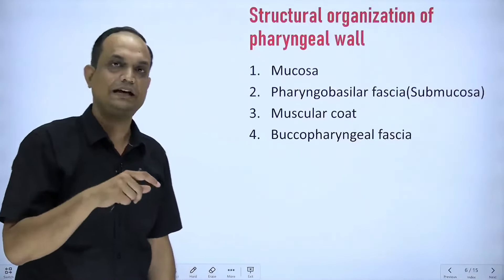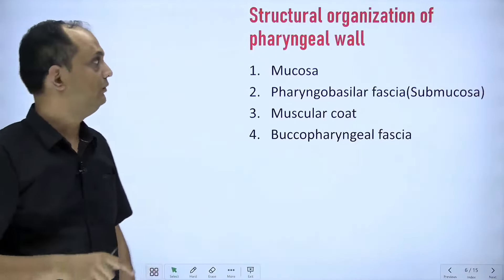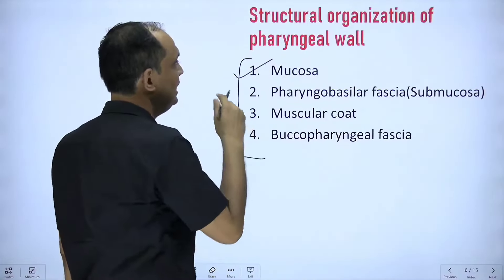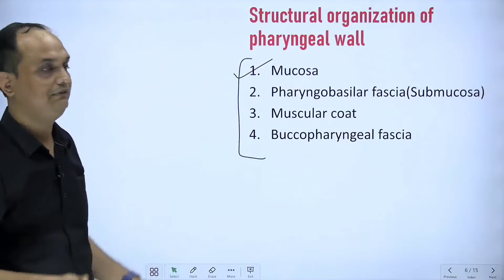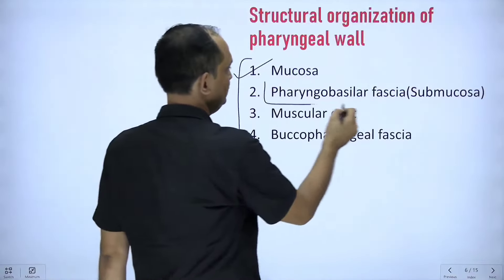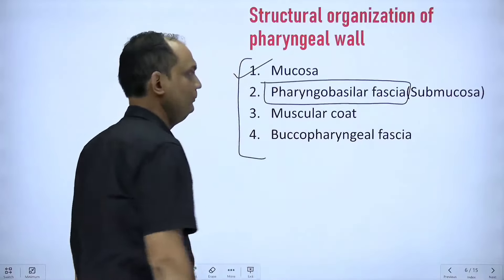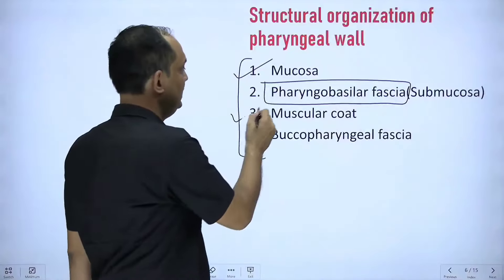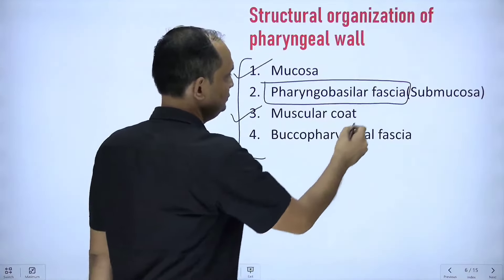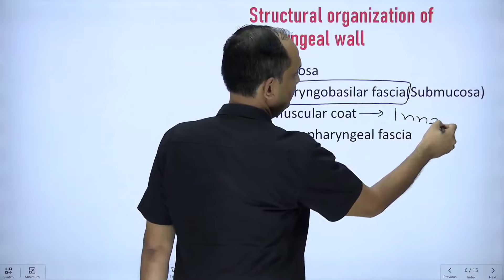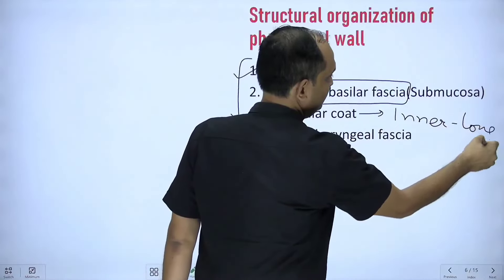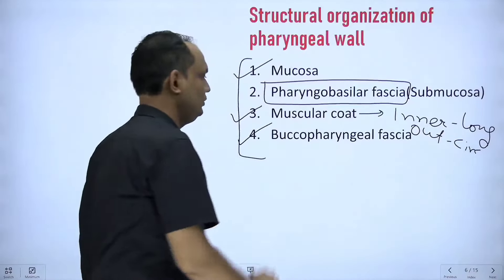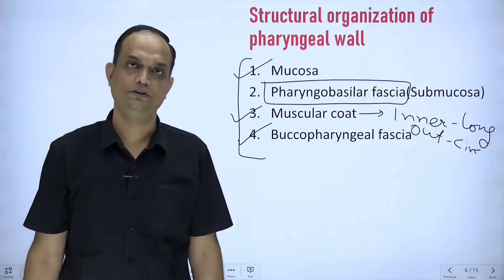We are discussing only the wall of the pharynx. There are four layers: the inner side is the mucosa; outside the mucosa you have the submucosa, with a modification known as pharyngobasilar fascia; outside the submucosa you have the muscular coat — the inner layer is the longitudinal muscle layer and outside is the circular muscle layer; and the outermost layer is known as buccopharyngeal fascia.